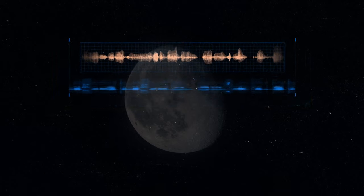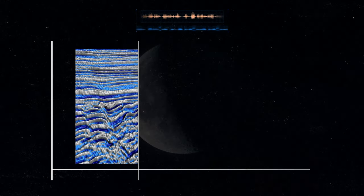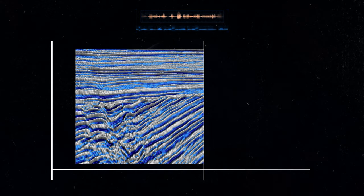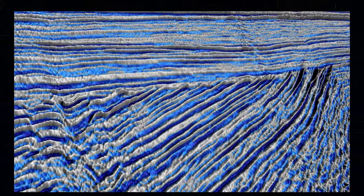When quakes or moonquakes happen, they generate sound waves. And by carefully listening to and studying these waves, scientists can create a detailed map of what's inside the object. They can figure out things like different layers, what they're made of, and how they're arranged.